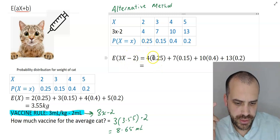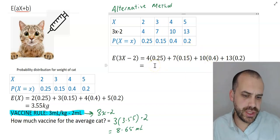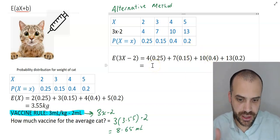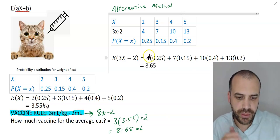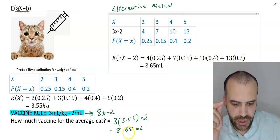All right, so we've got 4 times 0.25, 7 times 0.15 there, 10 times 0.4 there, and 13 times 0.2 there. Now it should not be surprising to you to find out that the expected value of the amount of vaccine that we give out here is 8.65 when we do that calculation, which is the same as this one here.